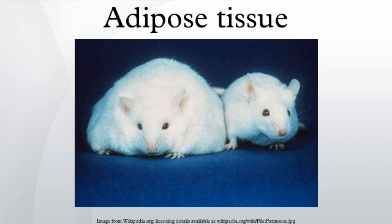Adipose tissue contains many small blood vessels. In the integumentary system, which includes the skin, it accumulates in the deepest level, the subcutaneous layer, providing insulation from heat and cold. Around organs, it provides protective padding. However, its main function is to be a reserve of lipids, which can be burned to meet the energy needs of the body and to protect it from excess glucose by storing triglycerides produced by the liver from sugars, although some evidence suggests that most lipid synthesis from carbohydrates occurs in the adipose tissue itself.